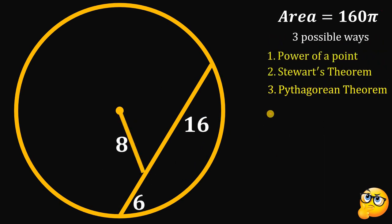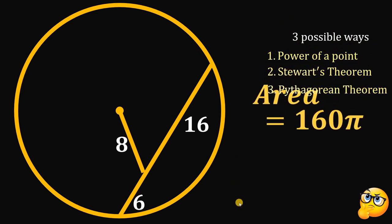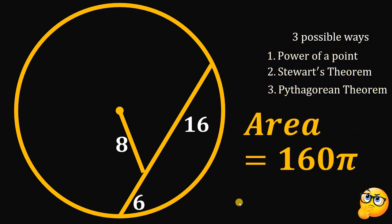Using all three methods, we can finally say that the area of this circle is equal to 160π square units. And as always, we are done.